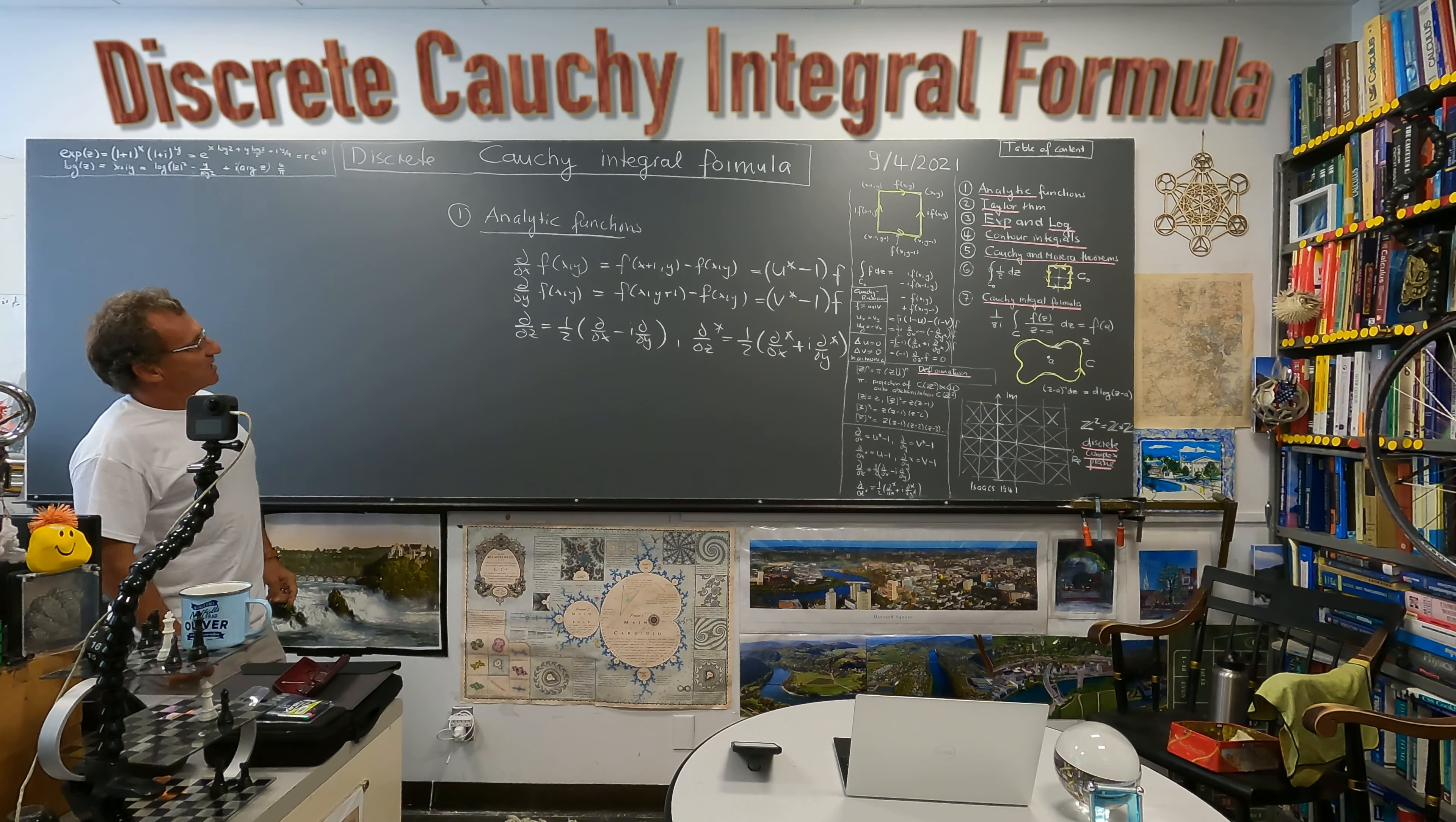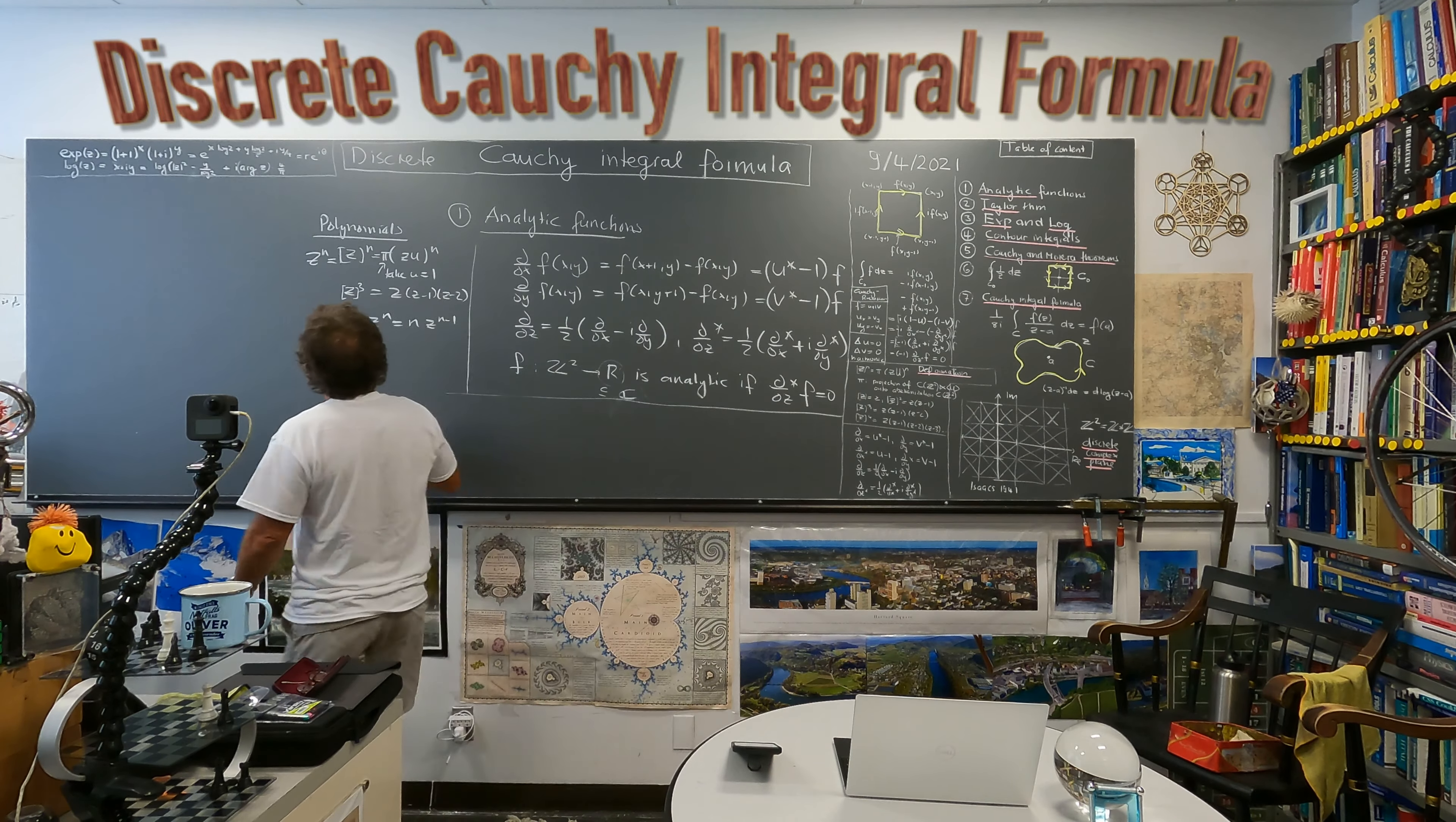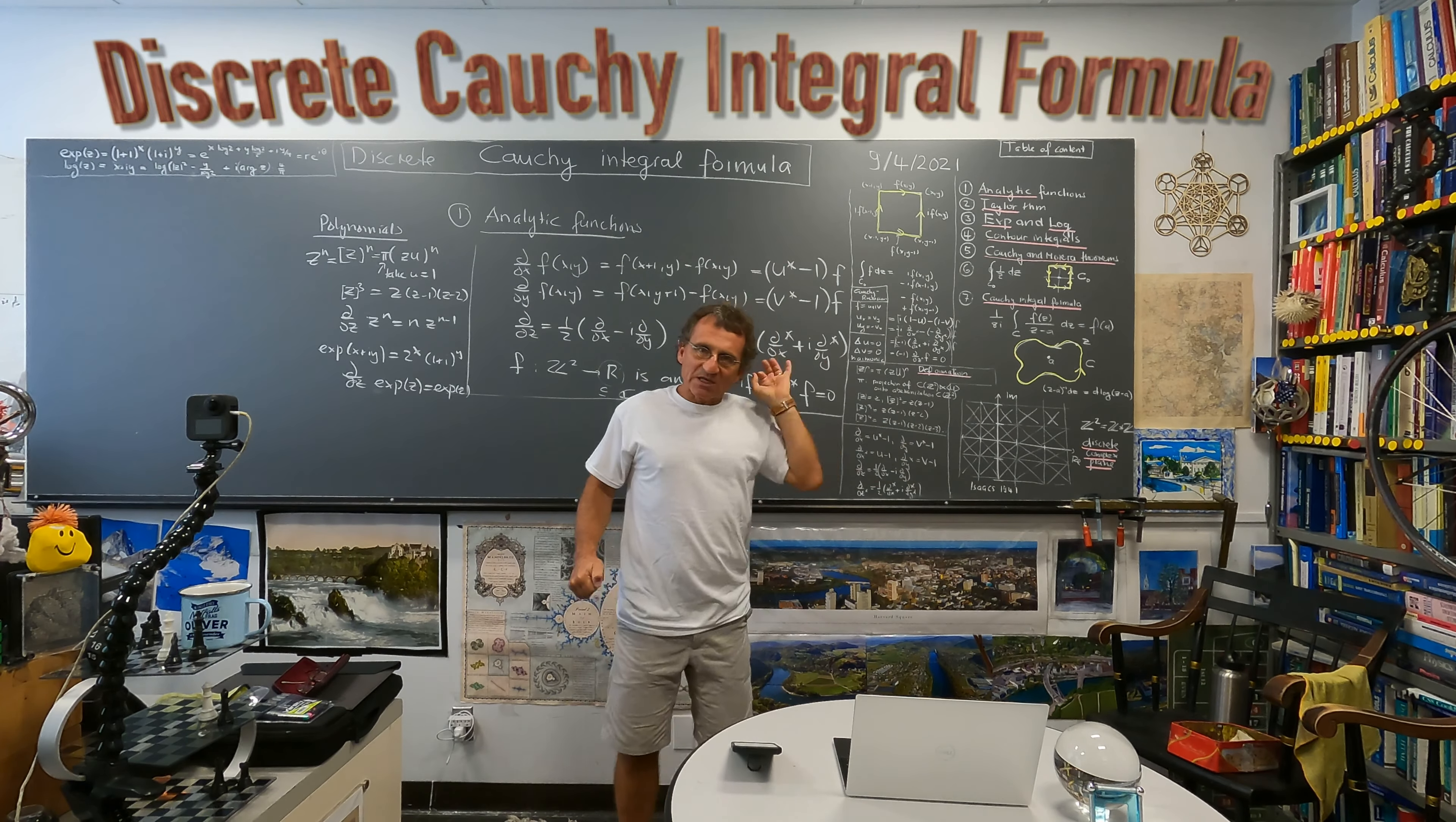And then F is analytic, but in principle everything works also with more general target spaces here. If D over Dz bar is equal to zero. And an example is also the exponential function. So this exponential function has been just defined in such a way that the exponential function is itself. So everything should be the same. So that was stressed last time. We want everything to be exactly the same.